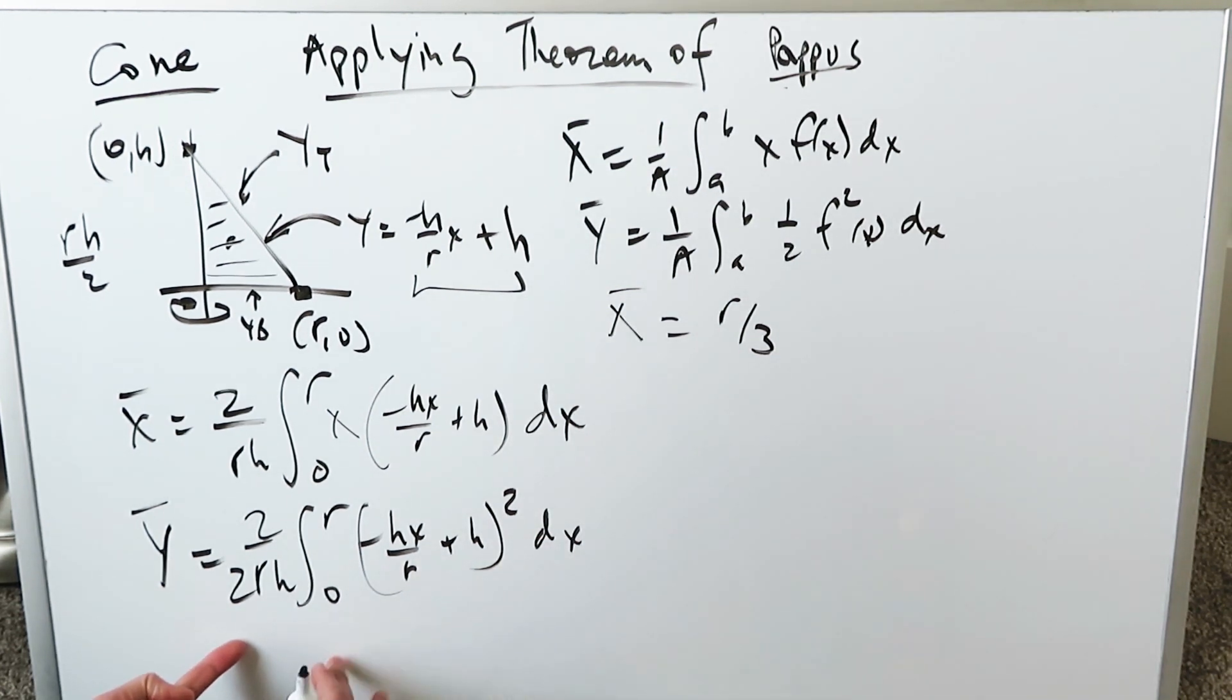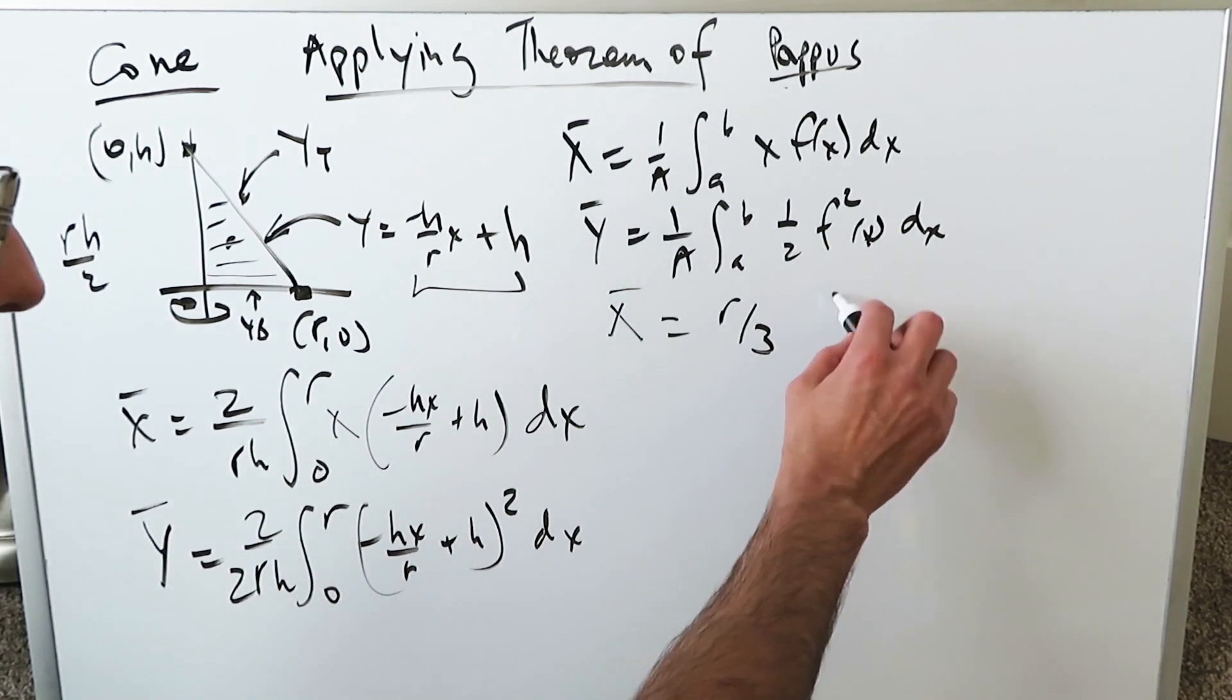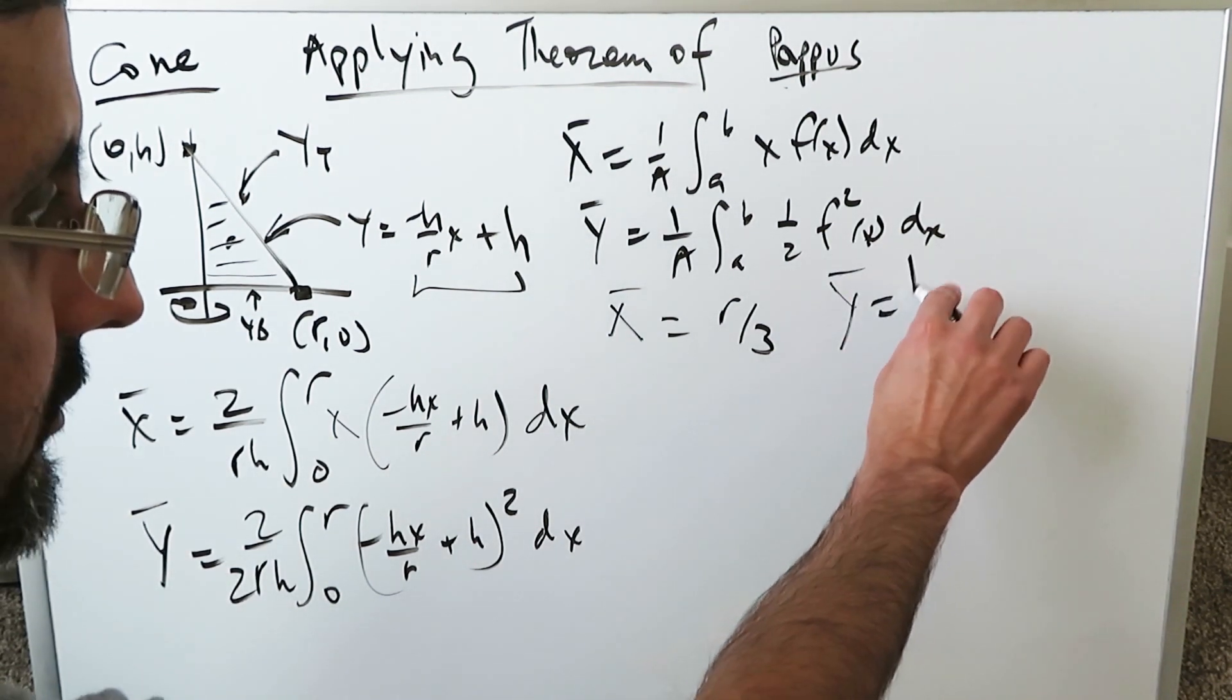Now when you look at this, you have to do an expansion here of this binomial. You can do that, but when you would do all of this in terms of its simplification, you'll get this y value of the centroid would be h over 3.